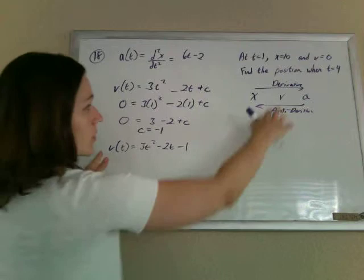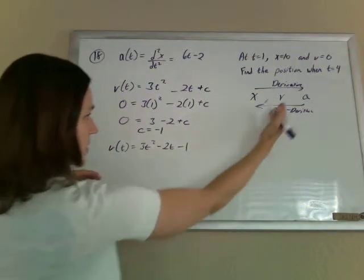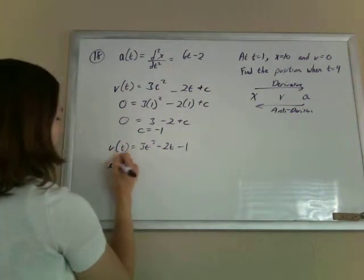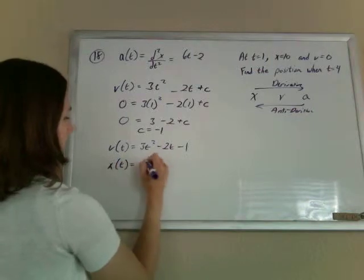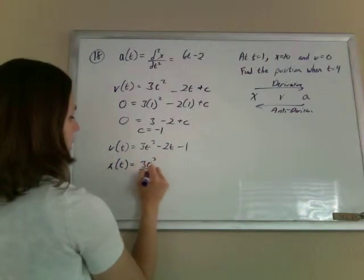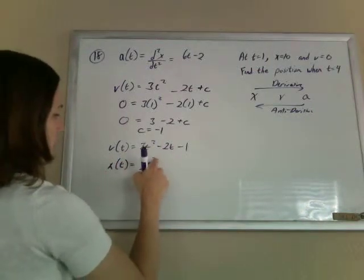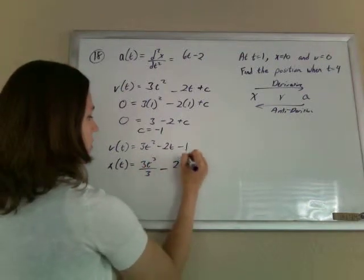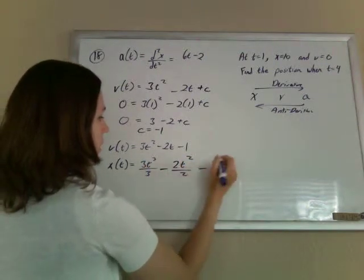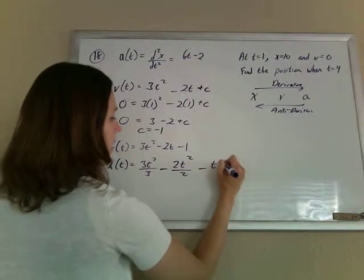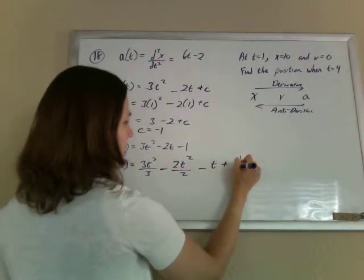So now we have the velocity, well of course they want position, so just do it one more time, take another antiderivative. The position is going to be, add one to the power, divide by what you get, so 3t cubed divided by 3, minus 2t squared divided by 2, minus t, plus another arbitrary constant, I'll call it d.